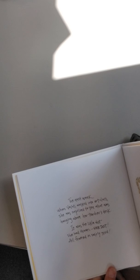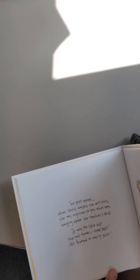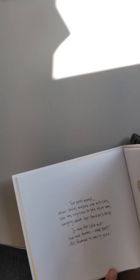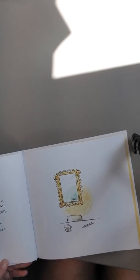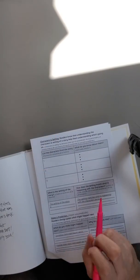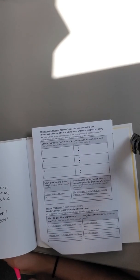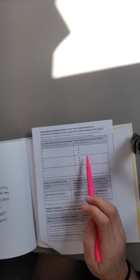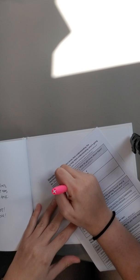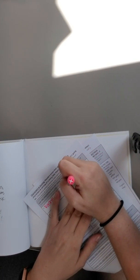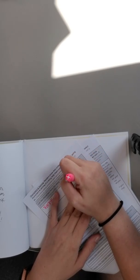The next week when Vashti walked into art class, she was surprised to see what was hanging above her teacher's desk. It was the little dot she had drawn, her dot, all framed in swirly gold. So let's go ahead and pause here and jump back to our respond and blog document, characters and setting. Readers know that understanding the characters and setting of a story helps them understand what's going on. So here you're going to list the characters from the story and what you know about them. So the first thing we're going to write down is Vashti. And Vashti thinks she can't draw.